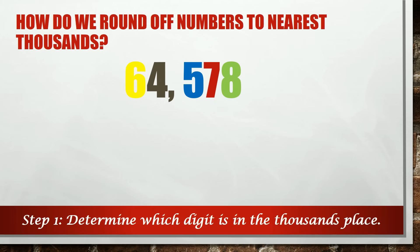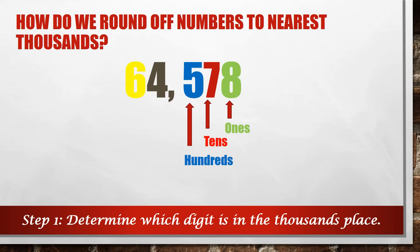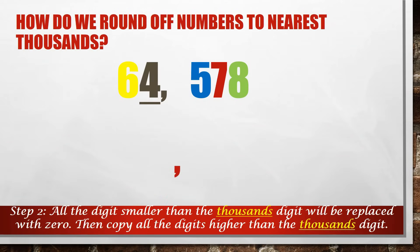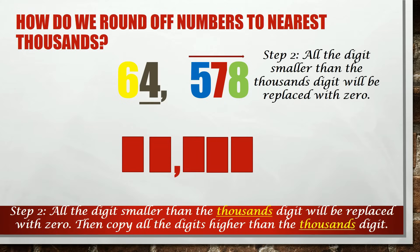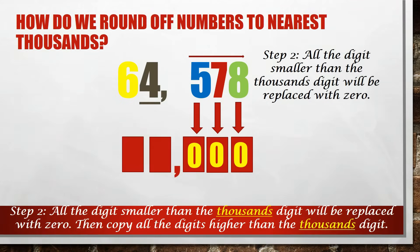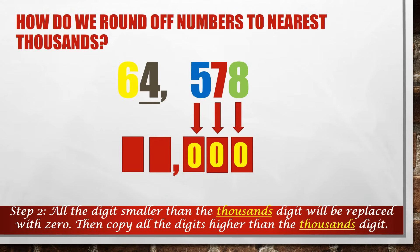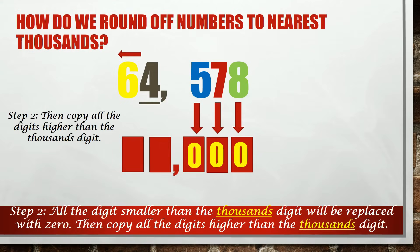We will just follow simple steps. Step 1 is to determine which digit is in the thousands place: ones, tens, hundreds, thousands. In this example, 4 is in the thousands place. Let's put an underline to show that 4 is the digit we need to round off. Then Step 2: all the digits smaller than the thousands digit will be replaced with 0 — those are the digits to the right of 4. So 8 will become 0, 7 will become 0, and 5 will become 0. Then copy all the digits higher than the thousands digit — those are the digits to the left. In this example, the digit to the left of 4 is 6, so we will simply copy that digit.